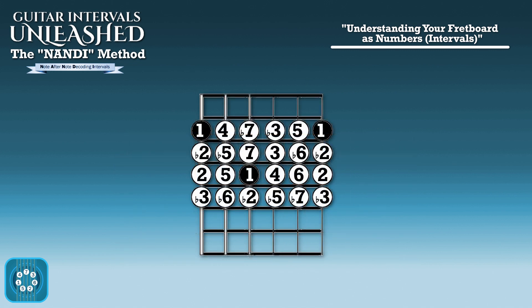But we can clear this up if we just look starting from the root and going across the fretboard in fourths. We get 1, 4, b7, b3, b6, b2.